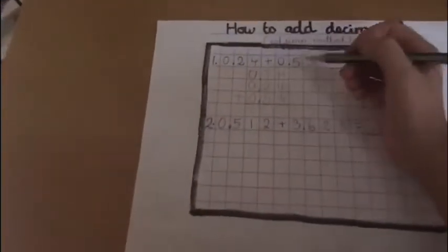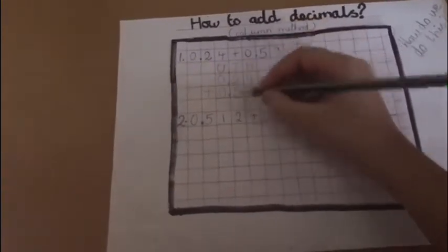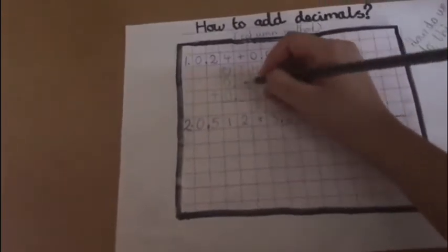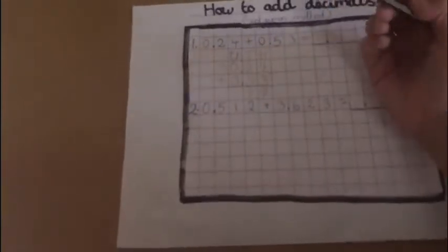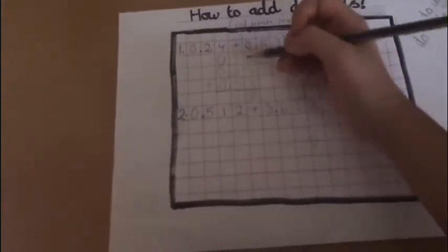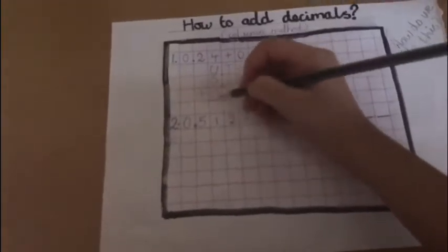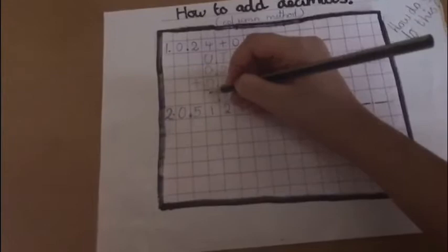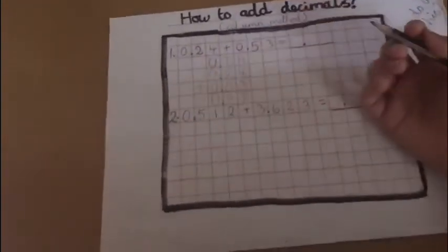Now let's start adding. 4 plus 3 is 7. 5 plus 2 is also 7. And 0 plus 0 is nothing, but you always have to remember that this box can't be empty. And then there's the decimal point.